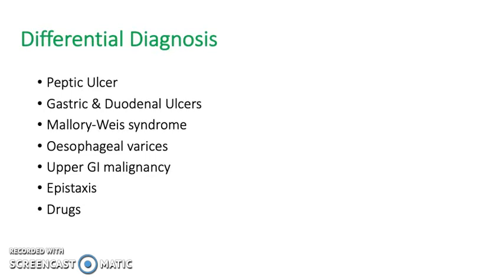Differential diagnoses to consider include peptic ulcer, gastric and duodenal ulcers, Mallory-Weiss syndrome, perforated oesophageal varices, upper GI malignancy, epistaxis, and drugs. Note that epistaxis — a nosebleed — can mimic upper GI bleed, so check whether the patient may simply be experiencing a nosebleed rather than a GI tract problem.